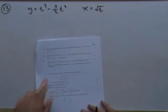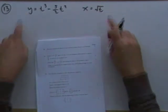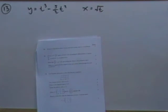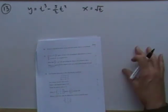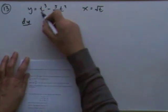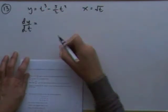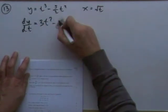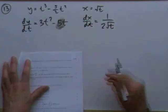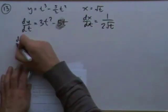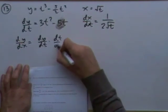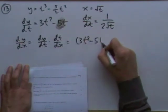Question thirteen: parametric equations — x and y expressed in terms of parameter t. Find dy/dx. I can't differentiate directly with respect to x since everything's in t, so I find dy/dt = 3t² - 5t, and dx/dt using the index/square-root pattern. Then dy/dx = (dy/dt)·(dt/dx).